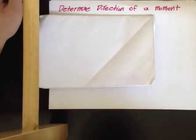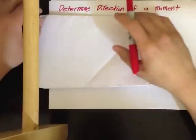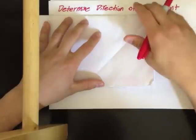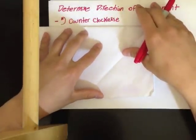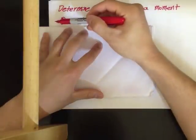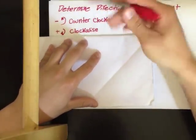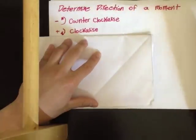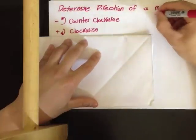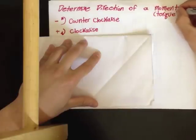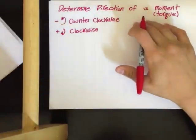This is a video on how to determine the direction of a moment. As you may or may not already know, a moment can either have a counterclockwise direction, which is considered a negative moment, or a clockwise direction, which is considered a positive moment. Moment is also considered torque. Now, let's start off with a simple moment problem.